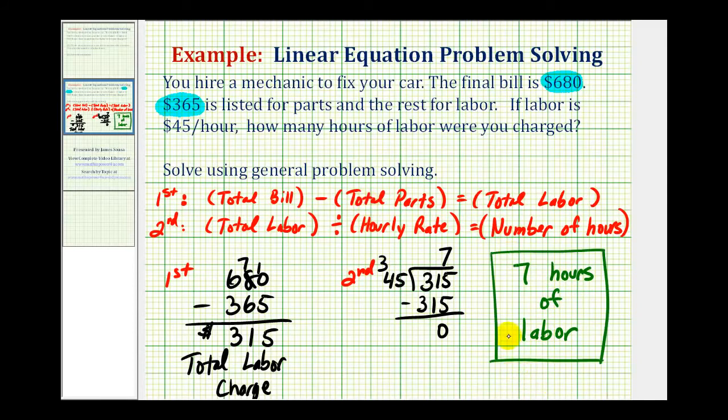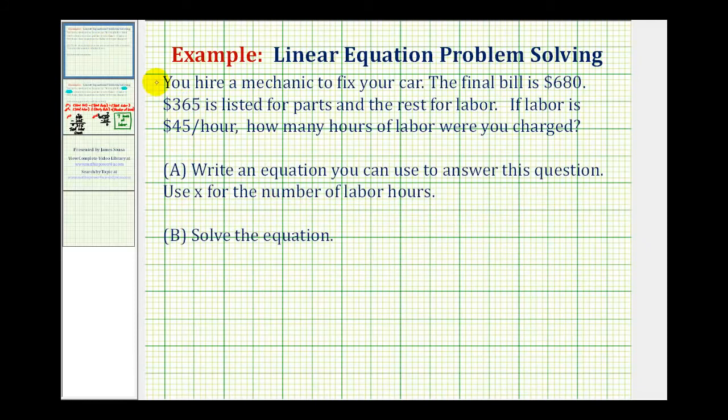Now that we've solved this using our reasoning skills, let's go back and write an equation. Using the same reasoning, we know our total bill equals $680. So $680 must equal the cost for parts, which is $365, plus the total labor cost, which is $45 per hour. If we let x equal the number of labor hours, this would be plus 45x.